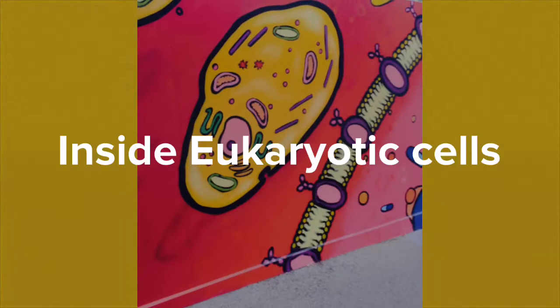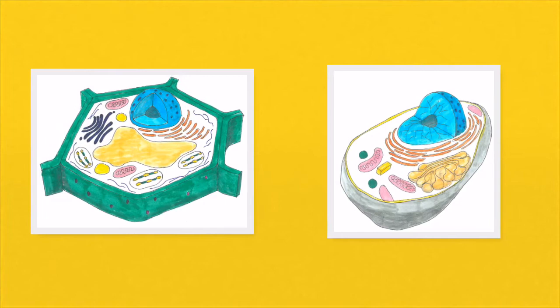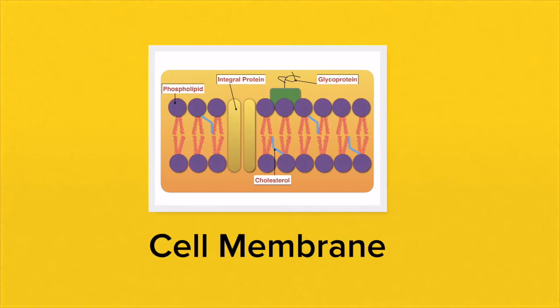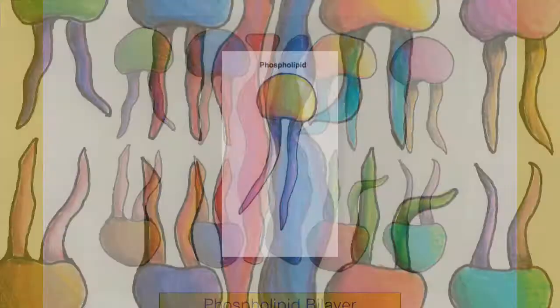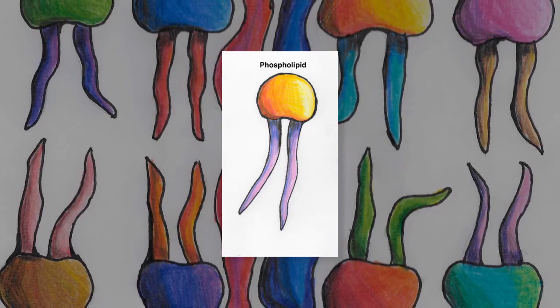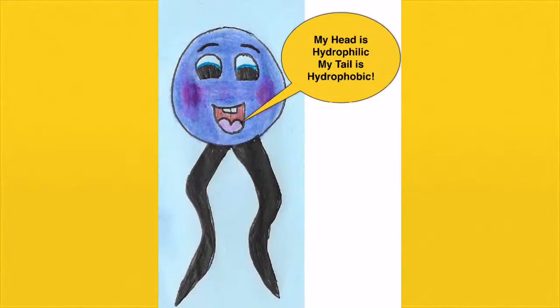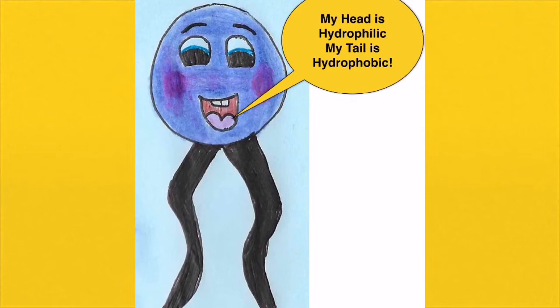Using a transmission electron microscope you can also see the structure of the cell membrane. All eukaryotic cells are surrounded by a cell membrane or plasma membrane. This membrane is made up of two layers of phospholipids — a phospholipid bilayer. Phospholipids have a head structure and a tail structure. The head part is hydrophilic and the tail part is hydrophobic.